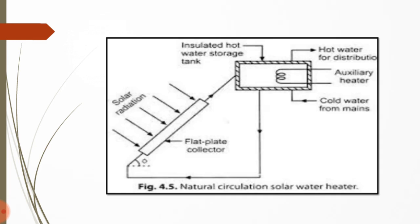Cold water is supplied to the tank from one side, and hot water is distributed to the system where it is used from the other side. There is also an auxiliary heater provided — in rainy or cloudy days when there is no sunlight or very low solar intensity, we use the auxiliary heater for water heating. So this system also works in cloudy and rainy seasons.